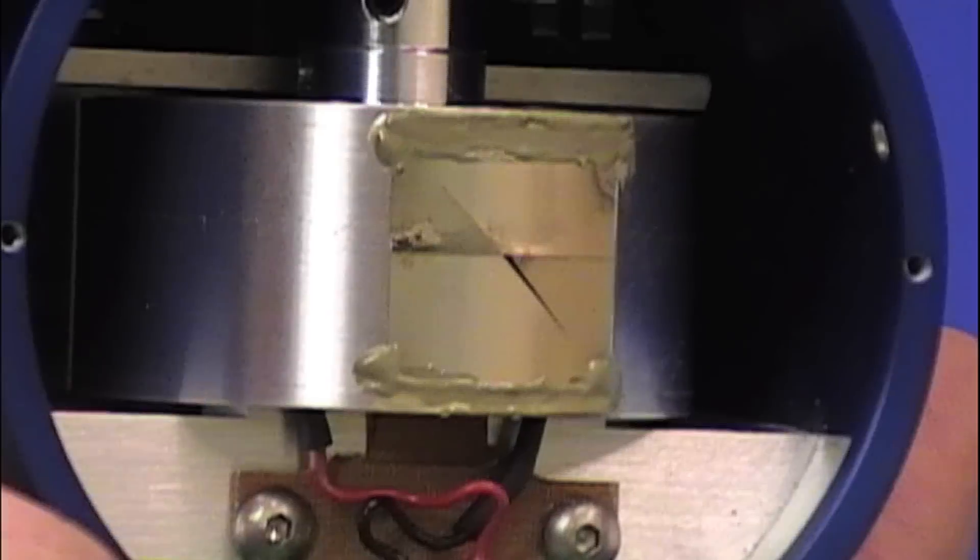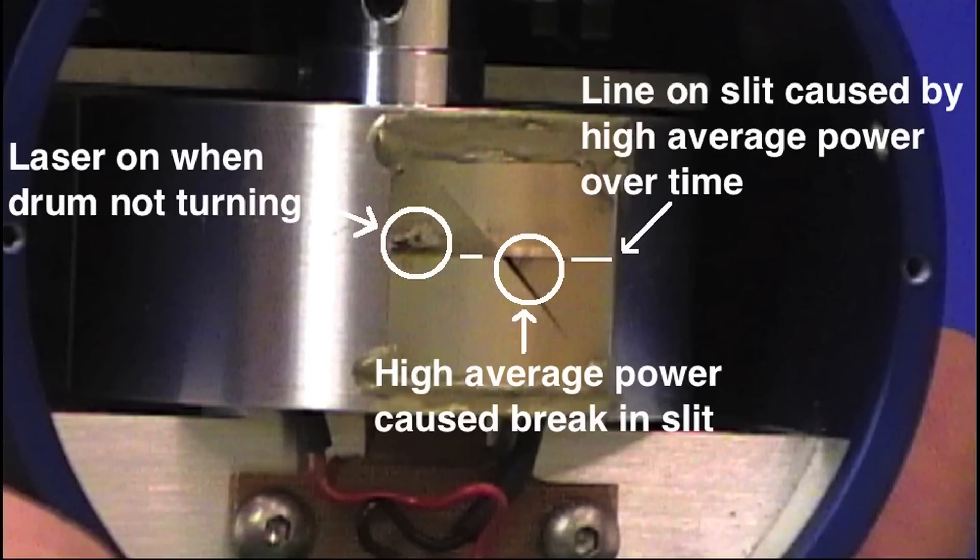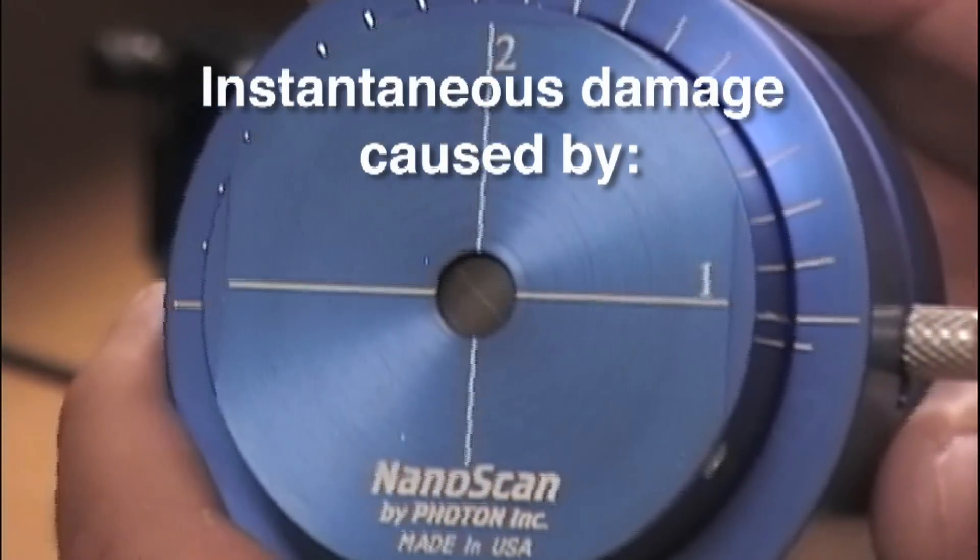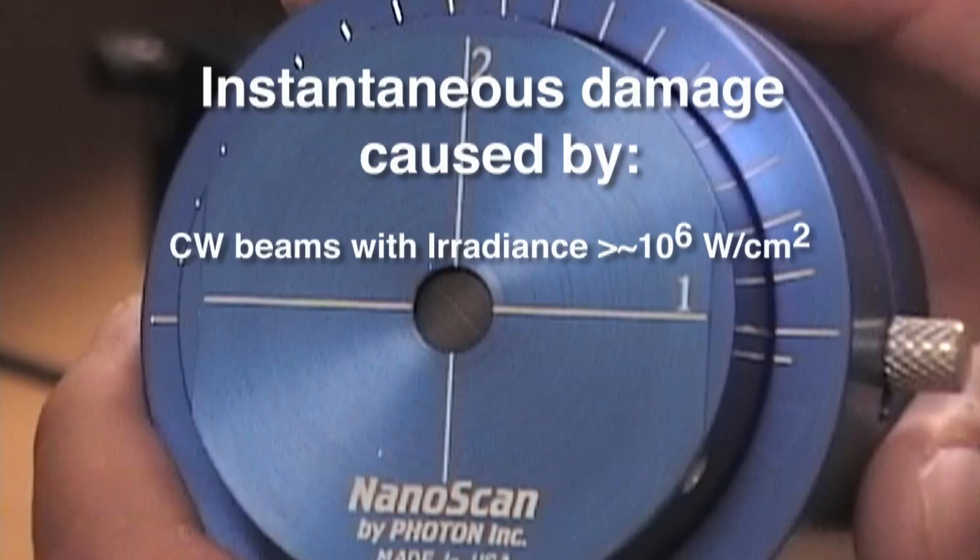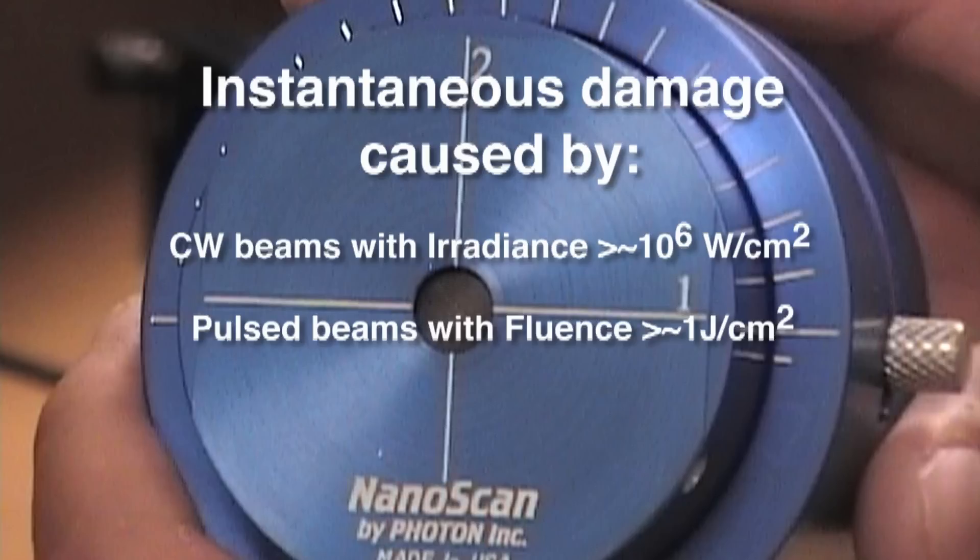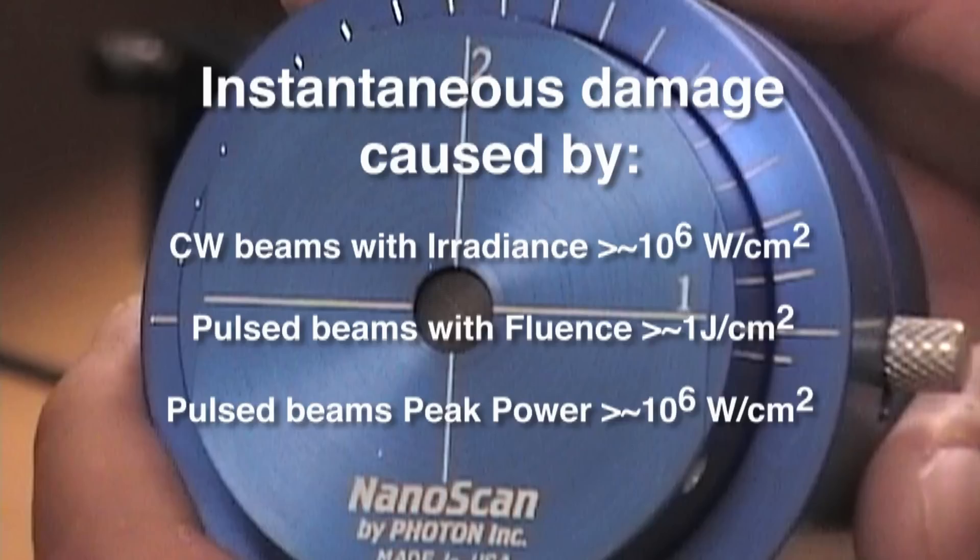It can be damaged by overheating by exposing the scan head to high average power. Instantaneous damage to slits occurs due to exposure to CW beams with irradiance greater than or approximately equal to 10 megawatts per centimeter squared, or from pulsed beams with a fluence of greater than or approximately equal to 1 joule per centimeter squared, or from pulsed beams with peak power greater than 10 megawatts per centimeter squared.